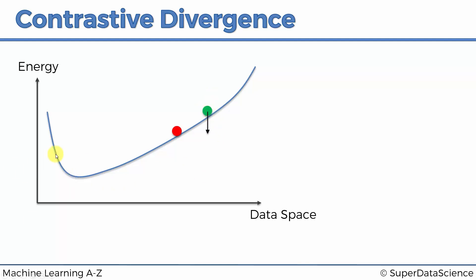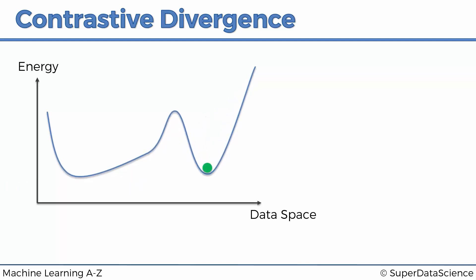Here, unlike gradient descent where we just find the minimum of a fixed curve, we have control over the curve itself — we adjust the weights. Since it's an energy-based process, we adjust the weights so that the minimum shifts to where our training inputs are. We pull the curve down at the training input location and push it up where the ball currently is. That way, the ball ends up inside the minimum without having to go through the entire long Gibbs sampling process.